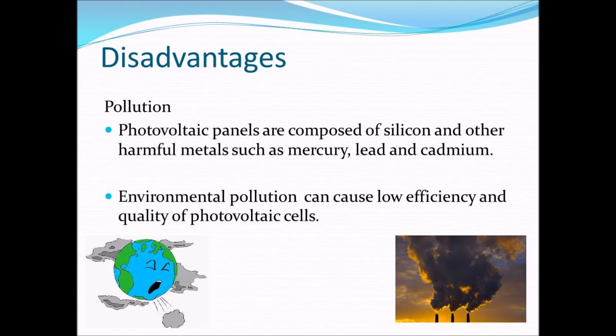Solar power is associated with pollution. While solar power certainly is less polluting than fossil fuels, some problems do exist. Photovoltaic panels are composed of silicon and other harmful metals such as mercury, lead, and cadmium. Environmental pollution can cause low efficiency and quality of photovoltaic cells. Also, some manufacturing processes are associated with greenhouse gas emissions.